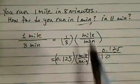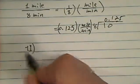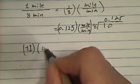That's the first one in 1 minute. In 11 minutes, then you have to do 11 times 0.125.